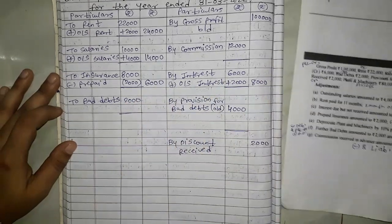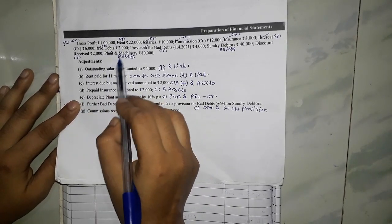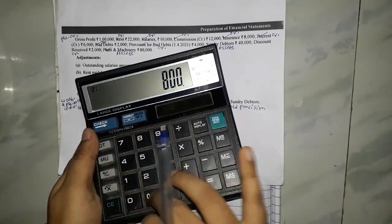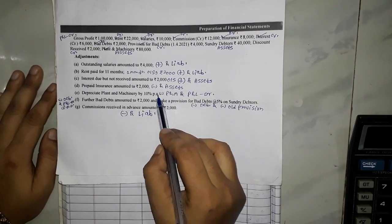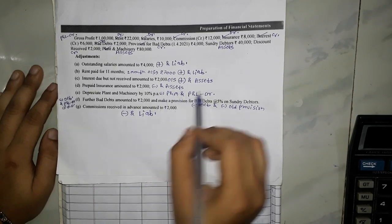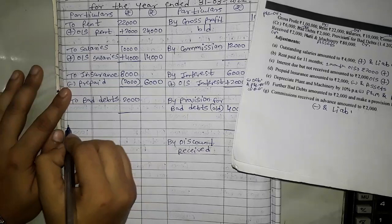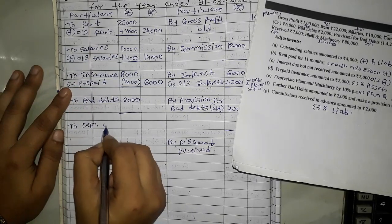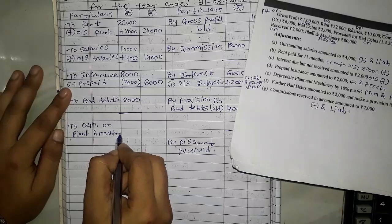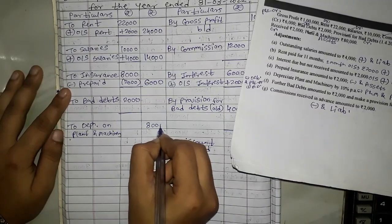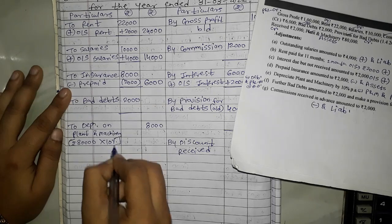After that, depreciate plant and machinery by 10%. Plant and machinery is 80,000 multiplied by 10% equals 8,000 depreciation. So: plant and machinery minus 8,000 — but we don't have a balance sheet so we cannot give that asset-side effect. But profit and loss debit — because the asset is depreciating, it is a loss. So write: 'To Depreciation on Plant and Machinery' 8,000.